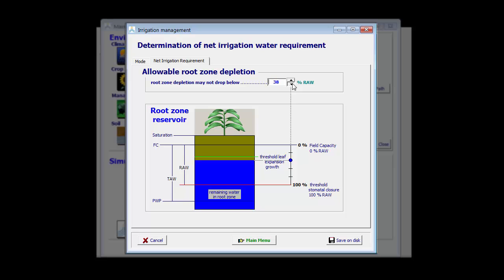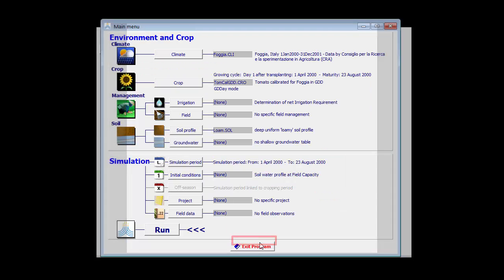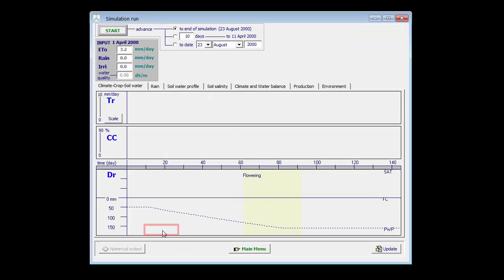Therefore, I am going to increase the allowable root zone depletion so that it corresponds with the threshold for leaf expansion growth. Now, I return to the main menu and now I run AquaCrop again.